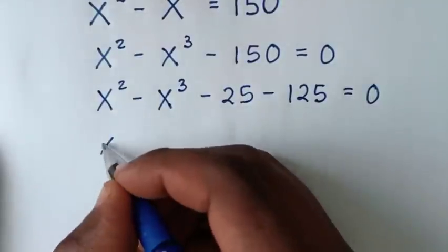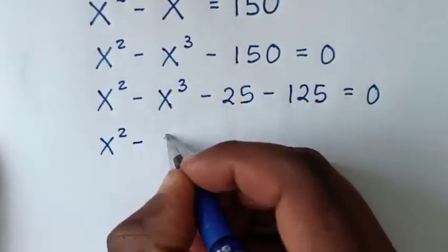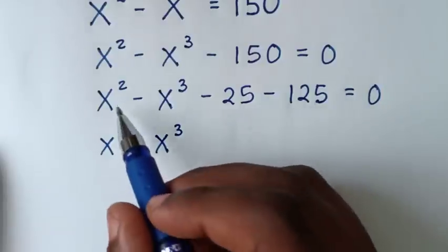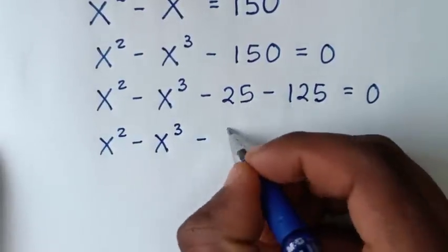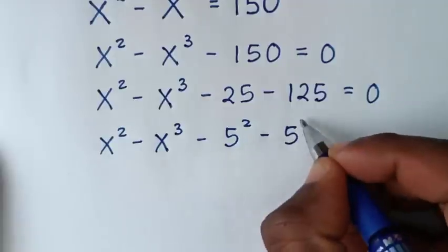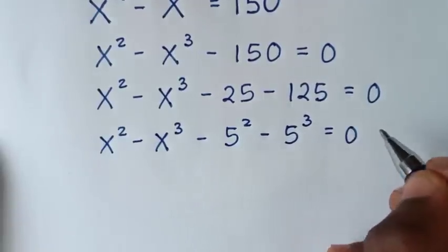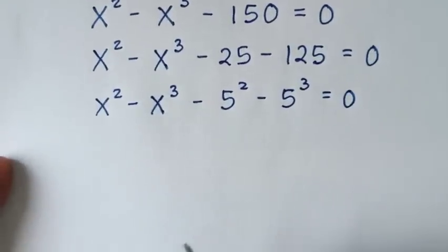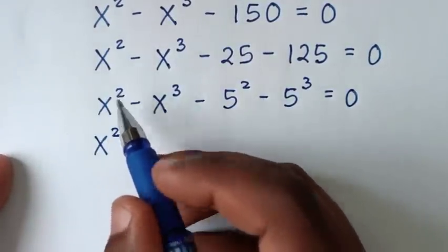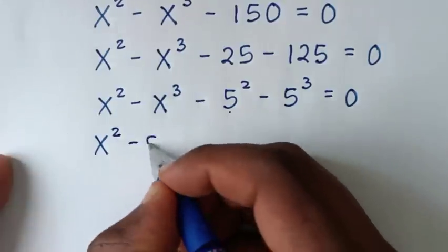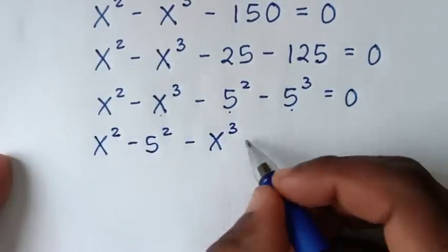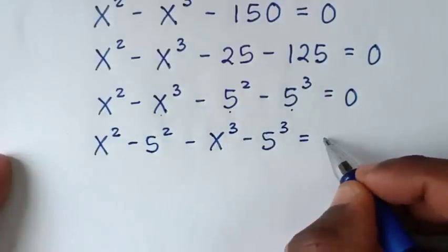Then in the next step, it will be x squared minus x power 3, then minus 25 — we'll place into exponent form, so minus 25 is 5 squared. Then minus 125, it is 5 power 3, is equal to 0.